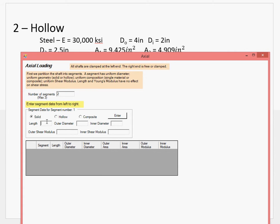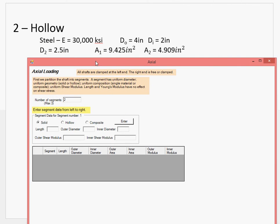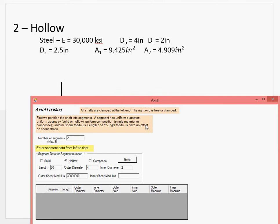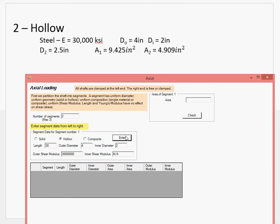Okay, so working from the left to the right, segment 1 has a length of 30 inches. Remember, we want to hit hollow because it's hollow. So now we can put in our outer diameter, which is 4 inches. Inner diameter, 2 inches. Outer shear modulus, 30,000 ksi. Inner shear modulus, nothing, because it's hollow. There's no material there. So you can just leave it blank. There is segment 1. What we solved for it, 9.425.